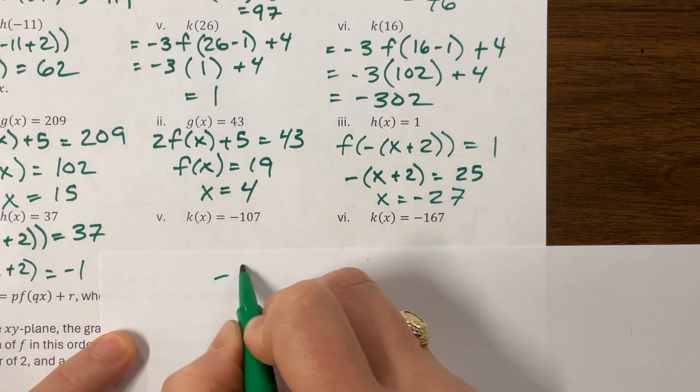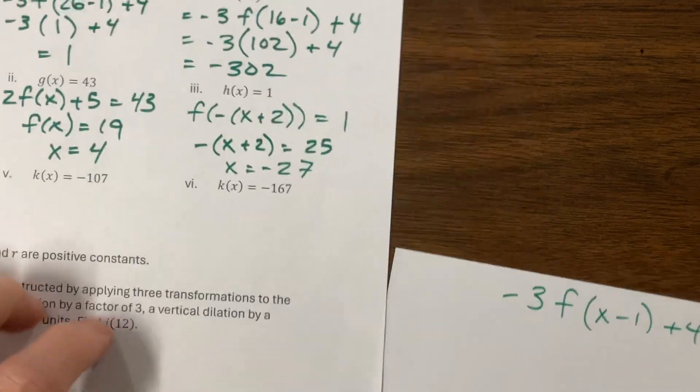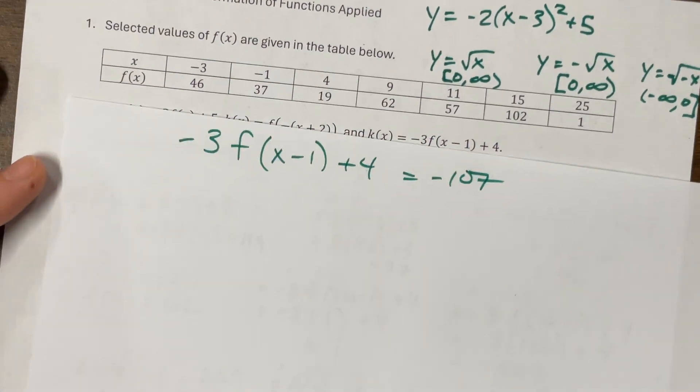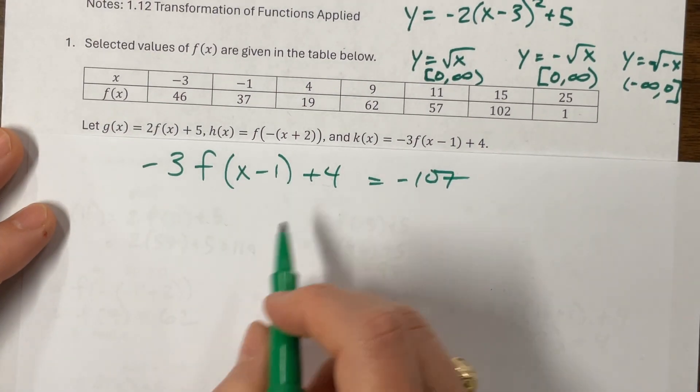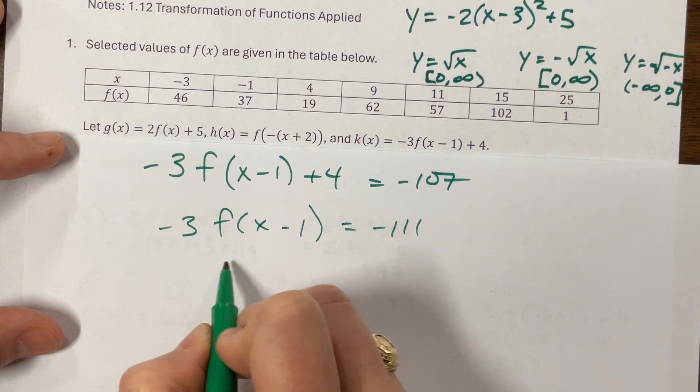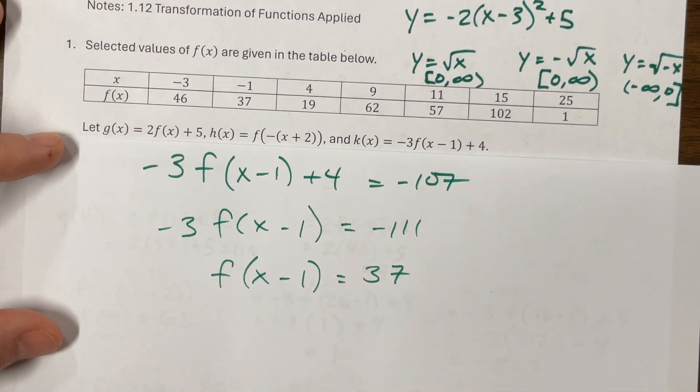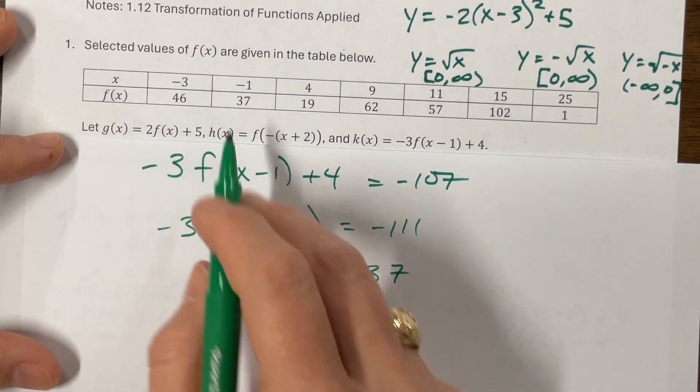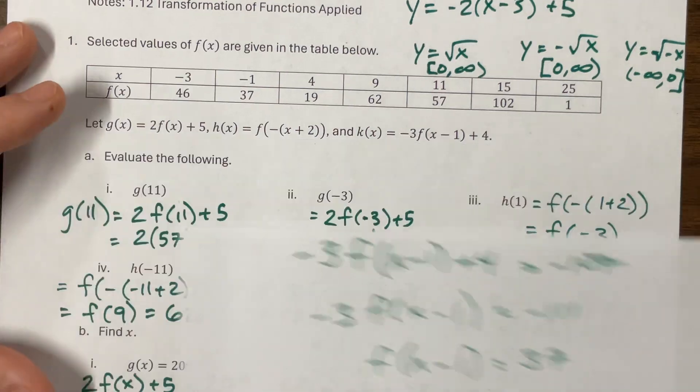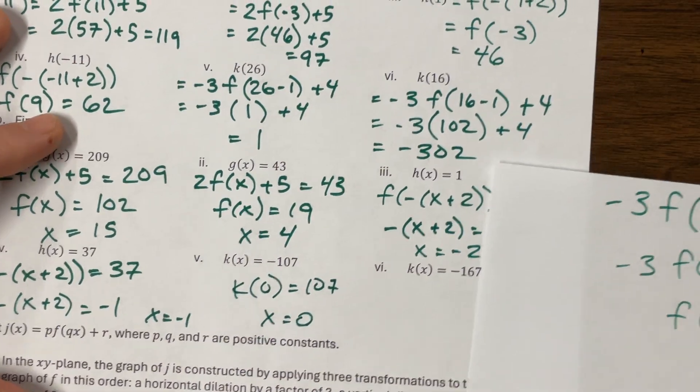So K of x was equal to a negative 3F of x minus 1 plus 4. And this is now supposed to be equal to negative 107. Here we know. Maybe you can see the table at the top. So we subtract 4. This gives me negative 3F of x minus 1 equals negative 111. Divide by negative 3. 3 goes in there 3 times with 2. So 7. And a negative divided by negative is a positive. Hopefully that showed up here. Oh, it does. 37. So when, so this x minus 1 will equal negative 1. Add 1 and x equals 0. So this was K of 0 is equal to 107. I guess the answer would be x is equal to 0.